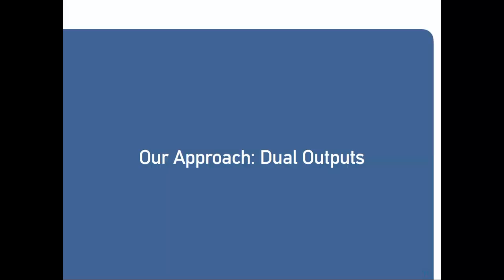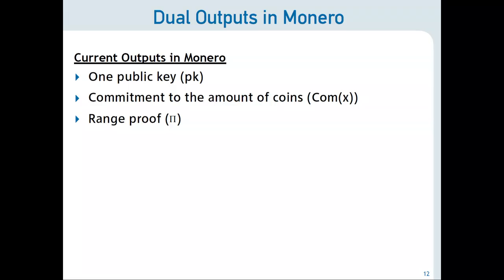This is the main idea of our approach. The first thing we had to do is define what we call dual outputs, or a new output format for Monero. I should note I'm going to oversimplify some of the cryptographic parts of how Monero works — I encourage you to listen to Sarang's talk for the details. Currently in Monero, outputs are composed of three elements: the public key or one-time account, a commitment to the amount of coins held at that public key, and a range proof proving the commitment is within some range from 0 to 2^64.